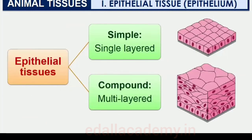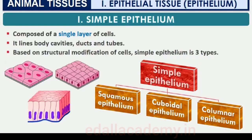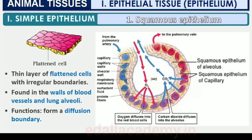On the basis of structural modification of the cells, simple epithelium is further divided into three types: squamous, cuboidal, and columnar. The squamous epithelium is made of a single thin layer of flattened cells with irregular boundaries. They are found in the walls of blood vessels and air sacs of lungs and are involved in forming a diffusion boundary.